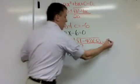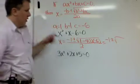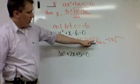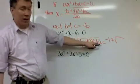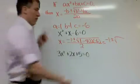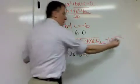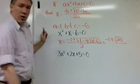So now I just need to do the simplification of all this. Negative 1 plus or minus the square root of, negative 4 times 1 times negative 6 is positive 24. And if I add that to 1, that's 25, all over 2.